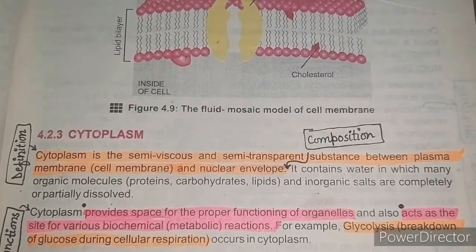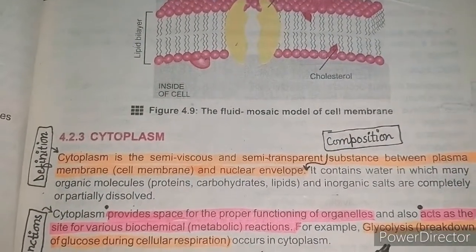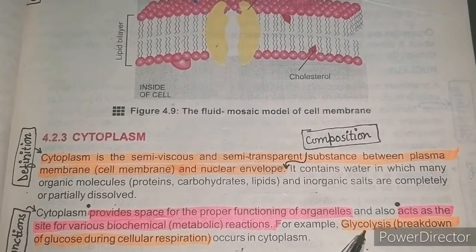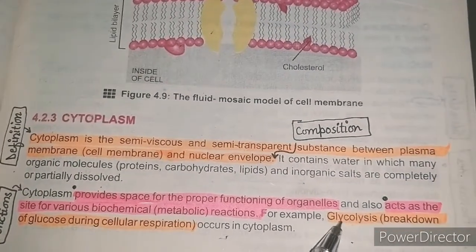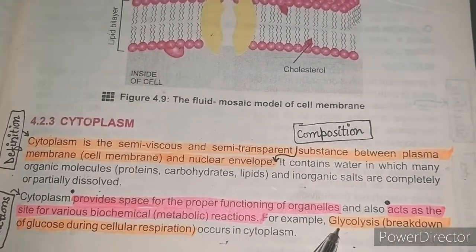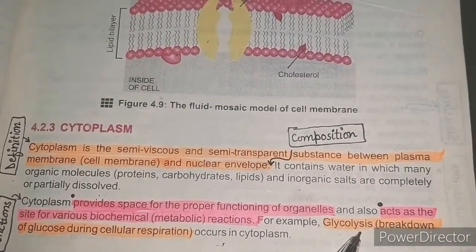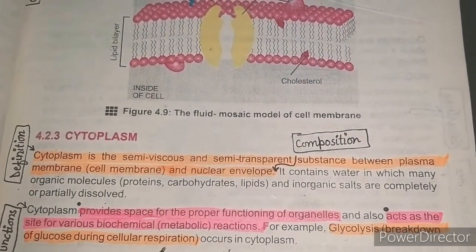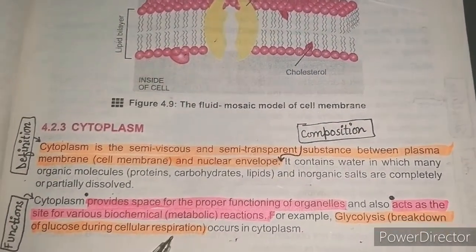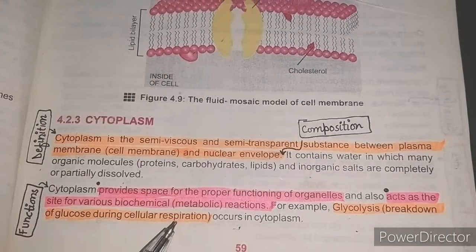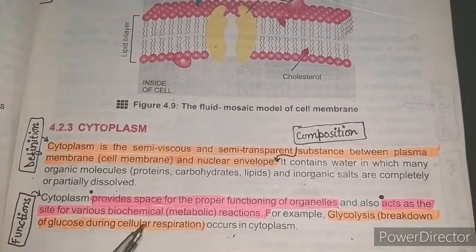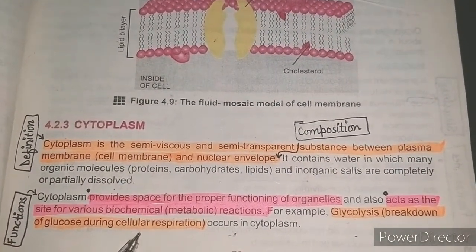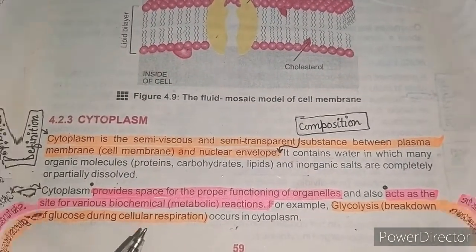What is glycolysis? 'Glyco' refers to glucose, and 'lysis' means to break down. So glycolysis is the breakdown of glucose during cellular respiration. When glucose is broken down during cellular respiration, this process is called glycolysis.